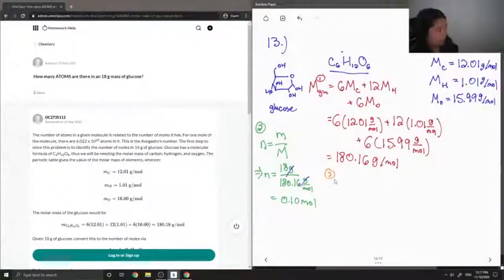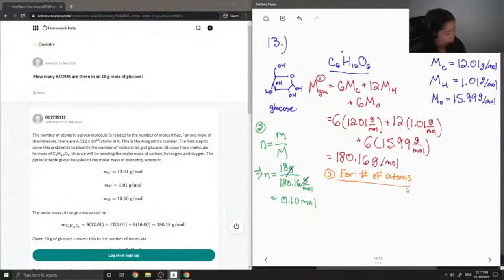But the question is asking how many atoms are there in an 18 gram mass, so for number of atoms, this is when we would use Avogadro's number. So I'm going to write out the number, which is 6.022 times 10 to the 23, and its units are in atoms per mole.